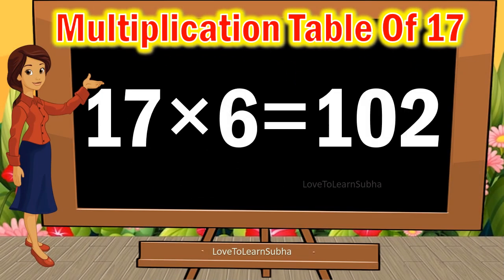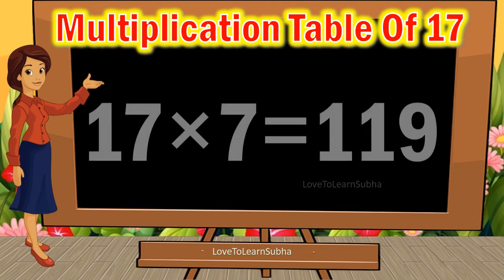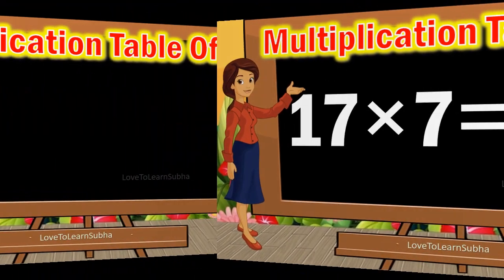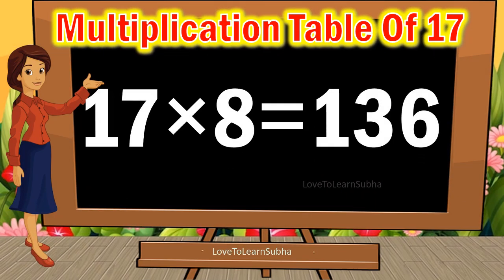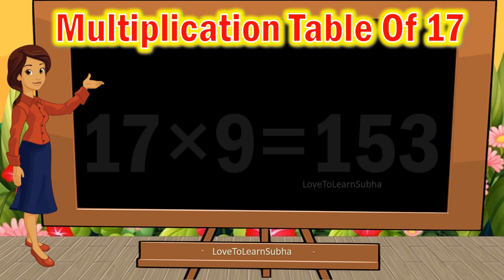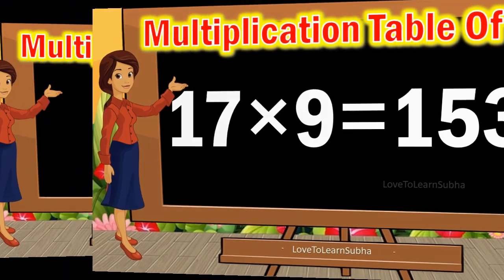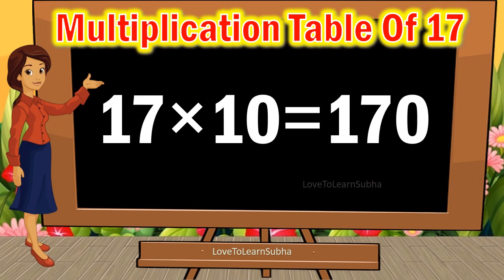17 sixes are 102, 17 sevens are 119, 17 eights are 136, 17 nines are 153, 17 tens are 170.